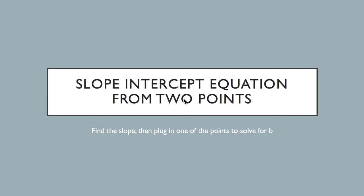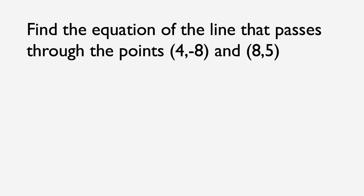In this video, we'll take a look at how to find an equation in slope-intercept form from two points. So let's say we're given these two points, 4, negative 8 and 8, 5.